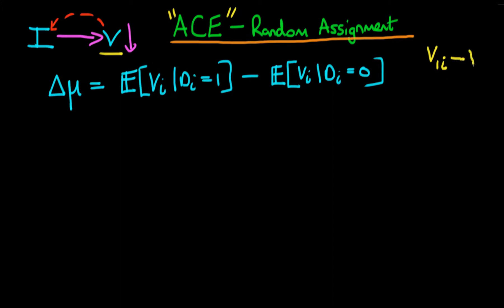We also considered another potential level of violence — the level of violence that state would obtain if they didn't receive infrastructure spending. What we were interested in was evaluating for each state the difference between these two potential outcomes, because that essentially tells us the causal effect of infrastructure spending on violence. These are in general going to be different for each state — they depend on state-specific characteristics.